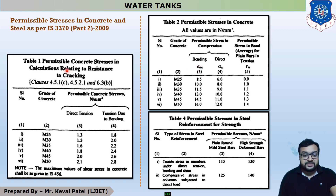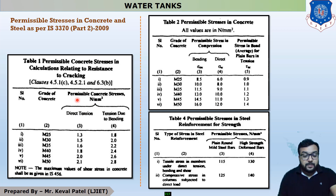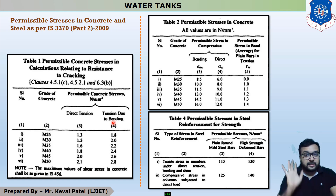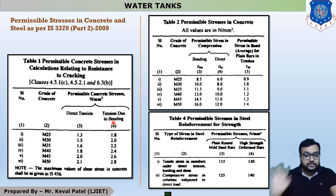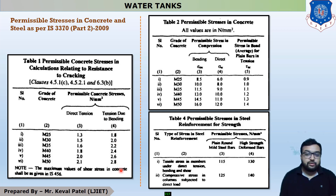From Table 1, the permissible concrete stress in Newton per mm squared includes tension due to bending. The abbreviation is sigma C B T — sigma for permissible stress, C for concrete, B for bending, and T for tension. This represents permissible concrete stress in bending due to tension, denoted as sigma C B T.